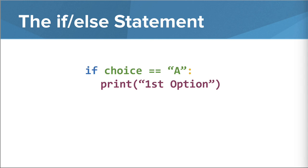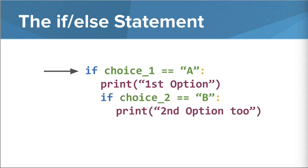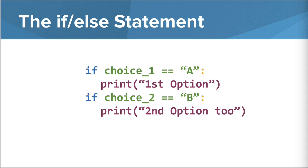To make this even more interesting, we can put an if statement inside an if statement. Let's read this through. It's saying if choice1 is equal to A, print first option. Then, if choice2 is equal to B, print second option too. We have to be careful because this is different than this one. Because here, the second if statement is not inside the first one.